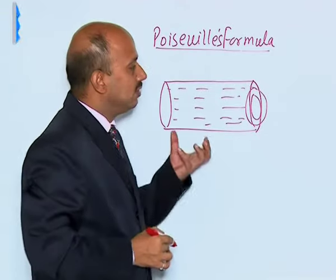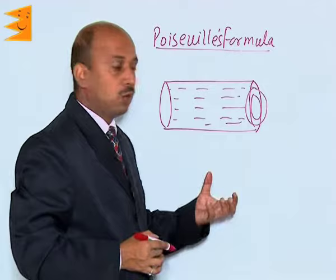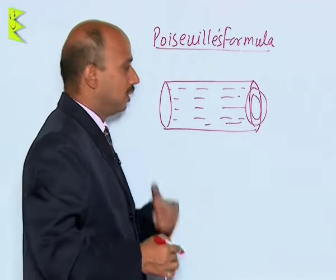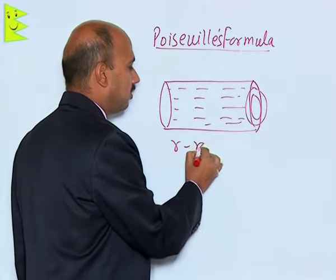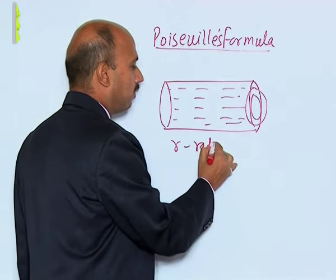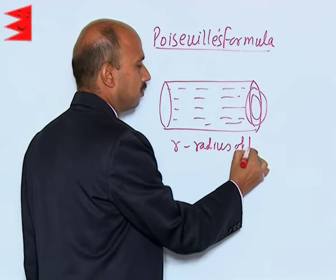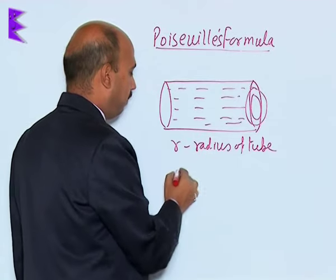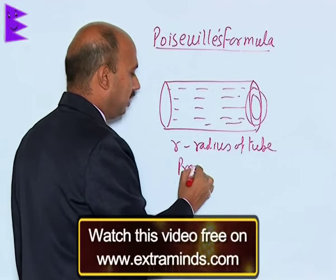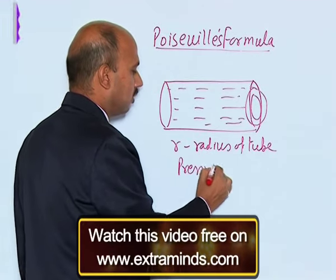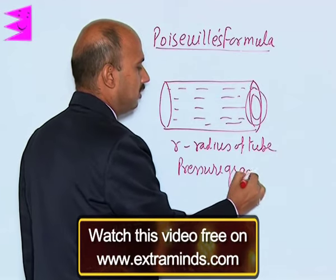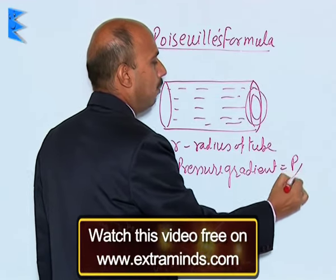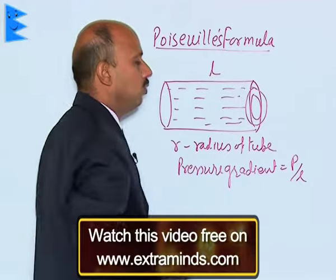In this case, when the liquid flows because of the pressure difference across the two ends of the tube, suppose R is the radius of the tube and the pressure gradient is P upon L, that is the length of the tube.